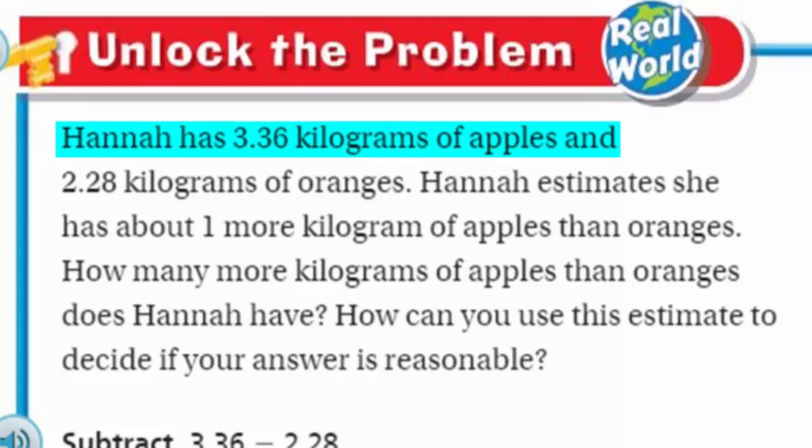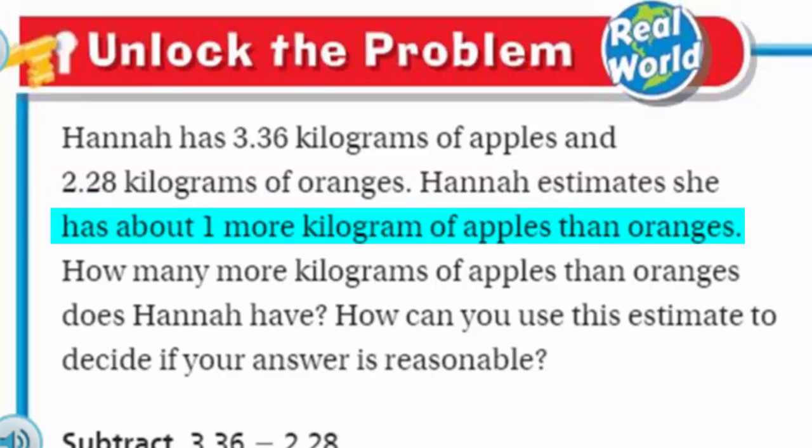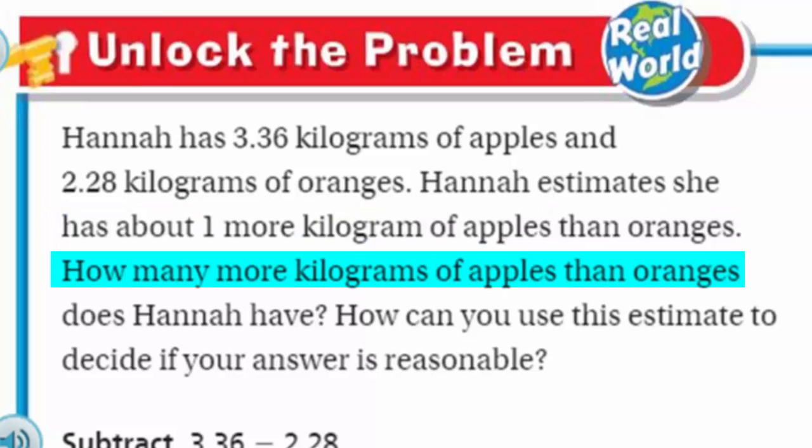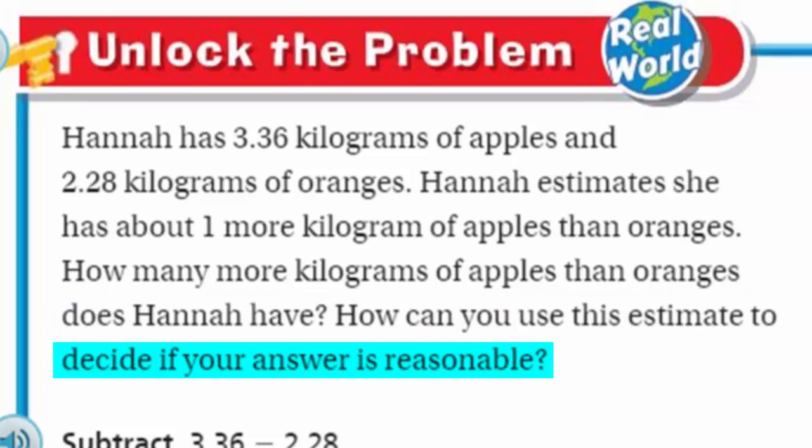This is Hannah! She has 3.36 kilograms of apples and 2.28 kilograms of oranges. Hannah estimates she has about 1 more kilogram of apples than oranges. How many more kilograms of apples than oranges does Hannah have? How can you use this estimate to decide if your answer is reasonable?